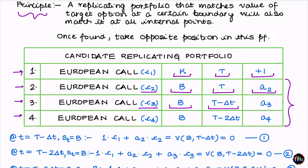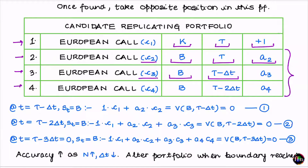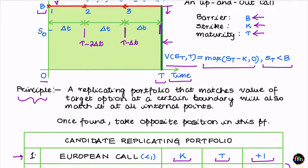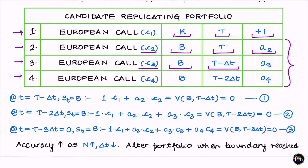Let's place ourselves at time t minus delta-t and assume the stock price equals B. At this point, C4 has already expired at T minus 2·delta-t. C3 has just expired and its value equals zero because strike equals B and current stock price equals B. The only two options with some value in the replicating portfolio are C1 and C2.